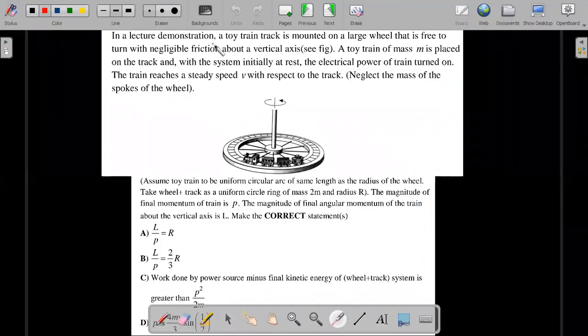In a lecture demonstration, a toy train track is mounted on a large wheel that is free to turn with negligible friction about a vertical axis. So there's no friction at the axis. A toy train of mass M is placed on the track with the system initially at rest. The electrical power of the train is turned on and the train reaches a steady speed V with respect to the track. So the track is also rotatable about this and the train is also rotatable. Neglect the mass of the spokes of the wheel.